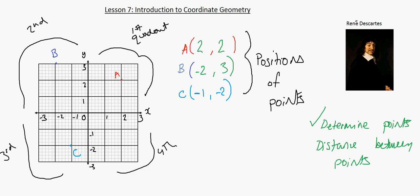So say we want to know the distance between two points on the same line. Let's name this point D. Now say we want to know the distance of A to D. We will work this out as a normal line. We can clearly say that the distance between D and A - you can just walk along like this - one, two, three. So the distance is three. Let's write in meters just so we have a measurement. So we have three meters.